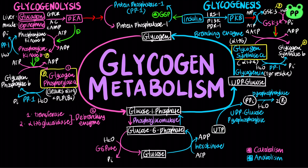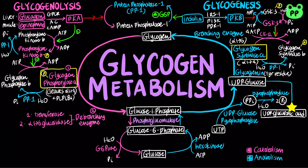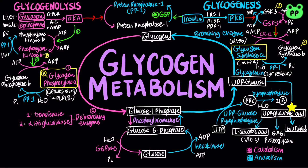The intermediate of glycogenesis, UDP-glucose, can also be oxidized into UDP-glucuronic acid, which is an important precursor to many biosynthetic pathways, including the synthesis of L-ascorbic acid or vitamin C, glycosaminoglycans, and proteoglycans. UDP-glucuronate also binds to bilirubin, which is a waste product of red blood cells, making it soluble in water.